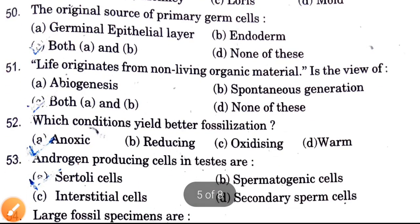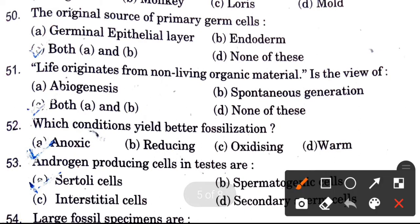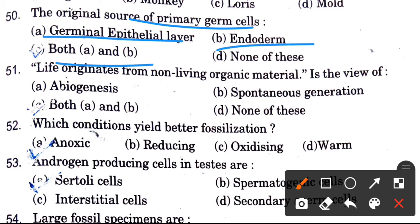The primary source of primary germ cells — where do primary germ cells come from? Options are germinal epithelial layer, endoderm, both A and B, and none of these. The answer is endoderm.